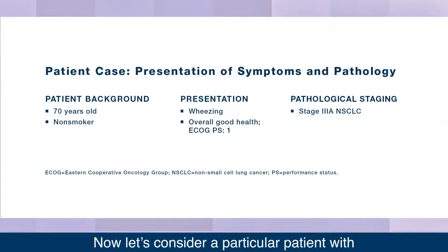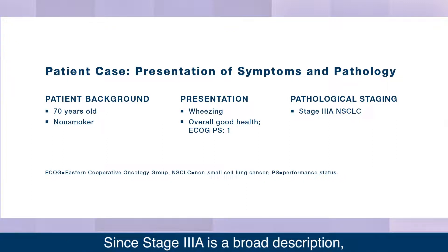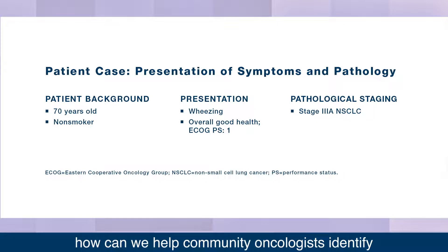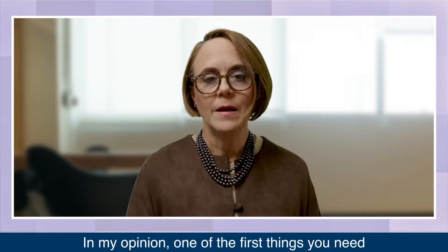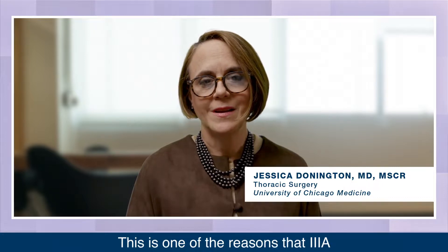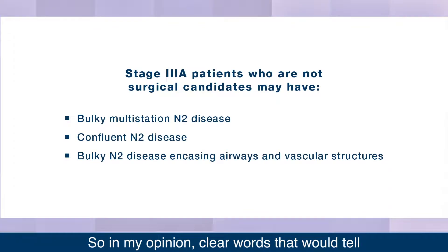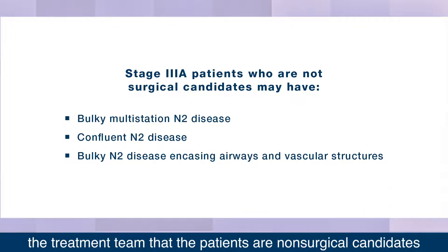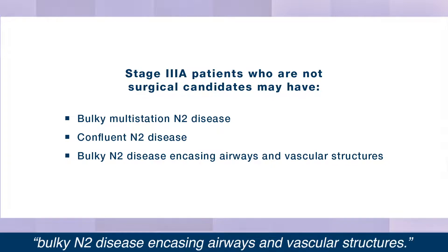Now let's consider a particular patient with unresectable stage 3a non-small cell lung cancer. Since stage 3a is a broad description, how can we help community oncologists identify an appropriate patient for non-surgical curative intent treatment? One of the first things you need is a better description of the extent of the nodal involvement. Clear words that would tell the treatment team that the patients are non-surgical candidates are those that include bulky multi-station N2 disease, confluent N2 disease, or bulky N2 disease encasing airways and vascular structures.